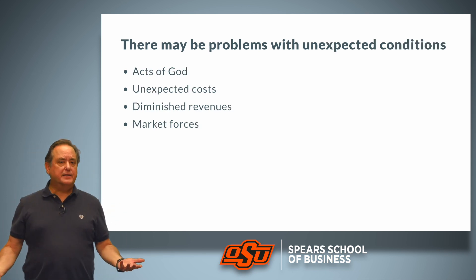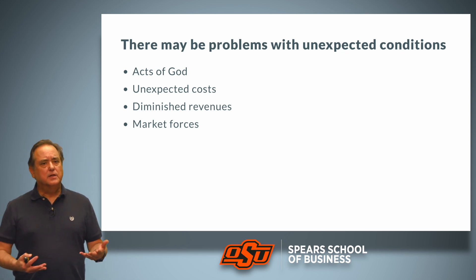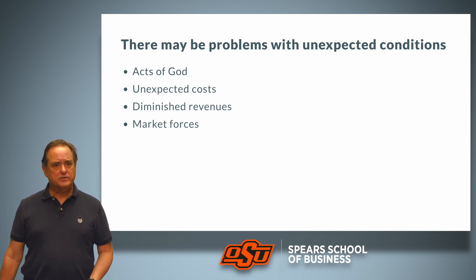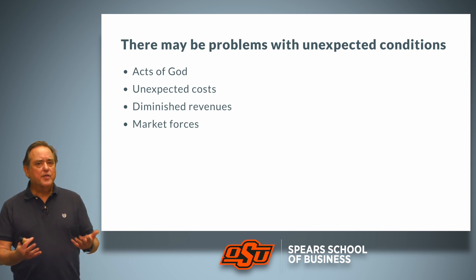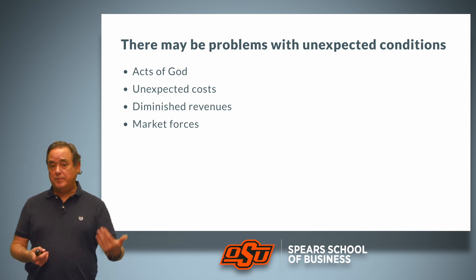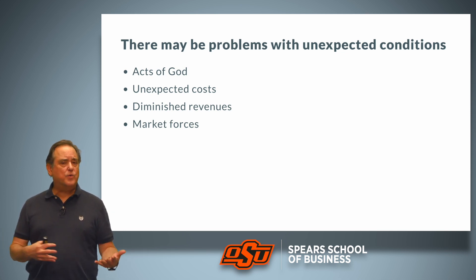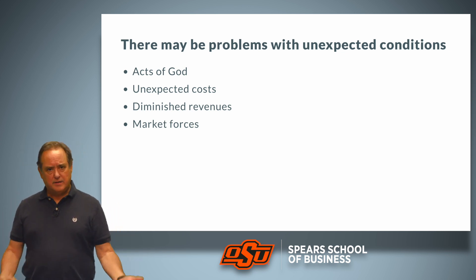The other category of problems is unexpected conditions. The first of these are acts of God — a legal term referring to matters completely outside the control of the parties, such as natural disasters or a fire caused by a lightning strike. There could also be unexpected costs, diminished revenues, or market forces at play that prevent the parties from executing on their strategy, whether it involves sales or purchases.